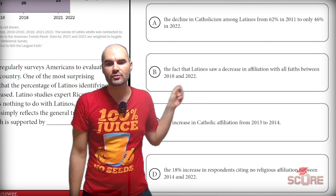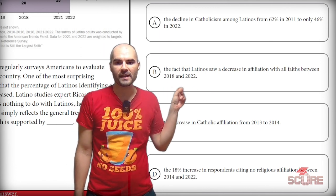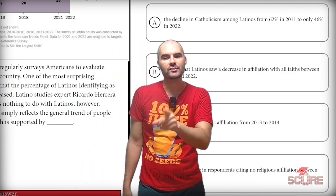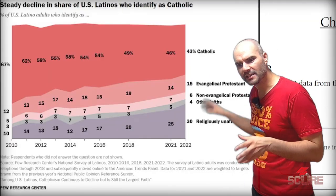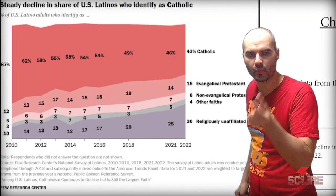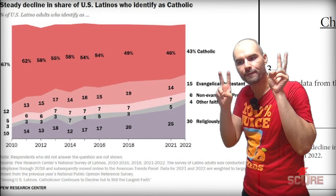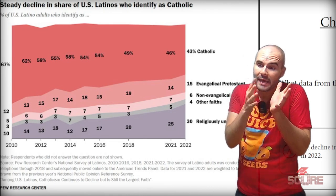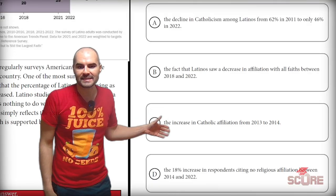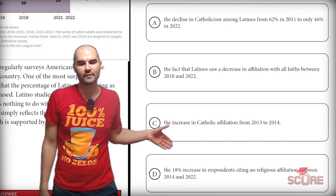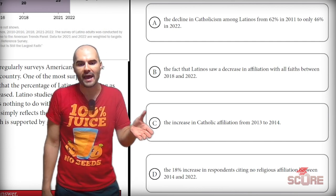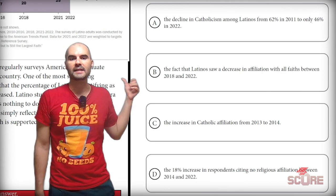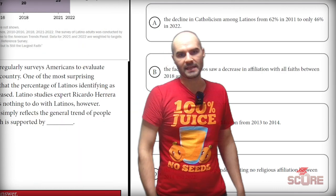B says the fact that Latinos saw a decrease in affiliation with all faiths between 2018 and 2022 — that would support the argument. But looking at the data, other faiths was 3% in 2018 and 4% in 2022, so B is not technically true. C says the increase in Catholic affiliation from 2013 to 2014 — that won't support the argument at all. That leaves us with D: the 18% increase in respondents citing no religious affiliation. D is your best answer.